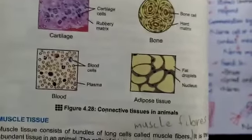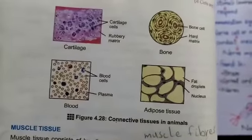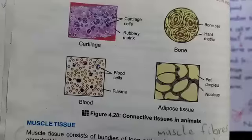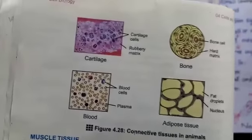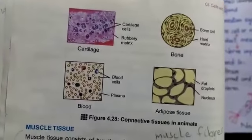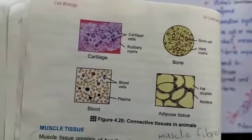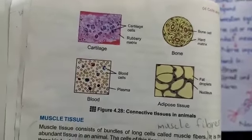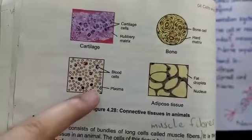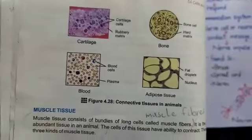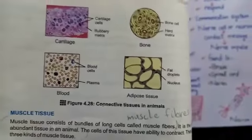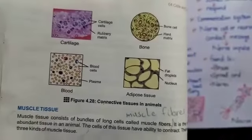Next, you will see blood cells as connective tissue. There are white blood cells, red blood cells, and platelets. And there is plasma. In the plasma, all these components are present.